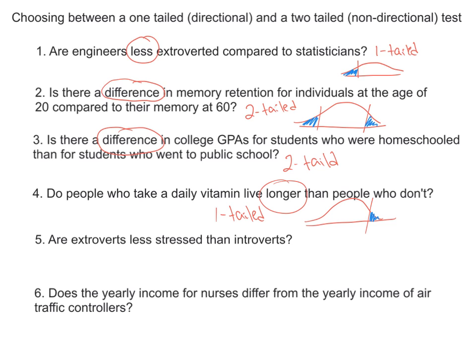The second to last one: extroverts are less stressed — again, this would be a one-tailed test. And the last one: does the yearly income for nurses differ from the yearly income of air traffic controllers? The key word here is 'differ,' so this would then be a two-tailed test.